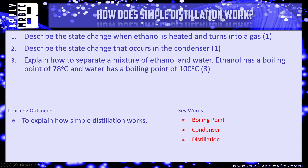Let's have a look at what the examiner can ask you — three questions for you. Number one: describe the state change when ethanol is heated and turns into a gas. Question two: describe the state change that occurs in the condenser — so turning from a gas back into a liquid. And number three: explain how to separate a mixture of ethanol and water where ethanol has a boiling point of 78°C and water has a boiling point of 100°C. Pause the video, have a go at the questions, and we'll see how you've done.